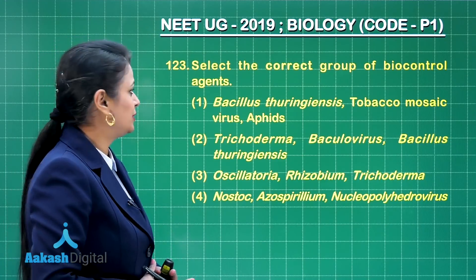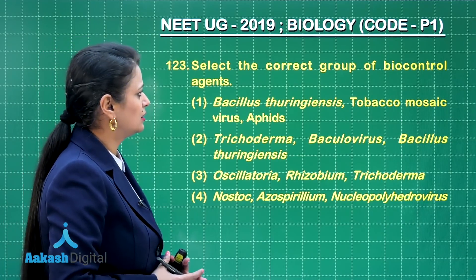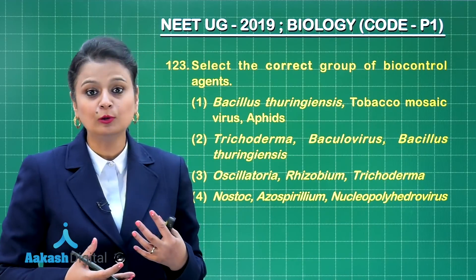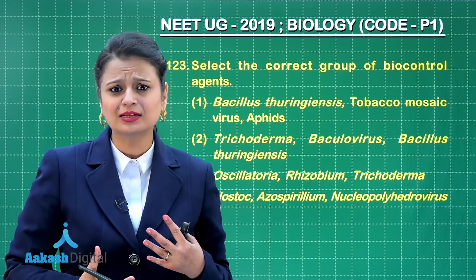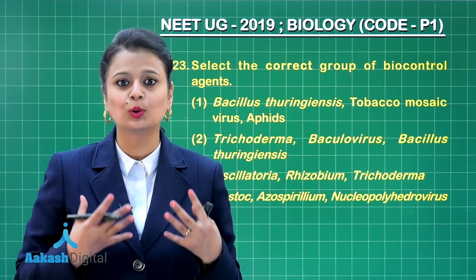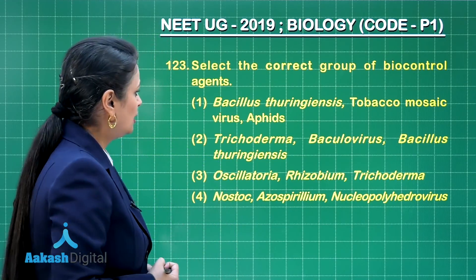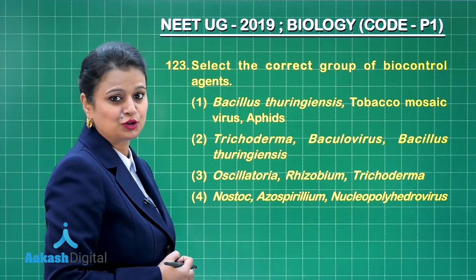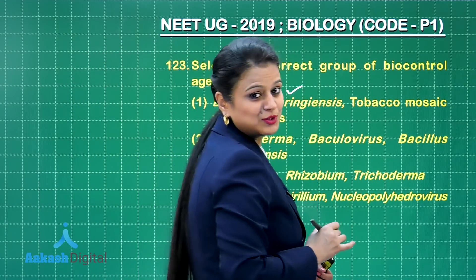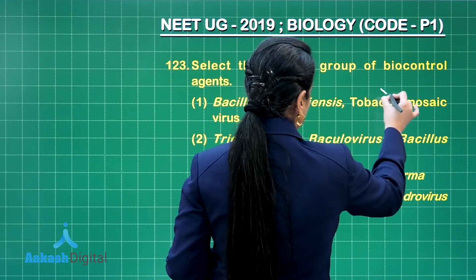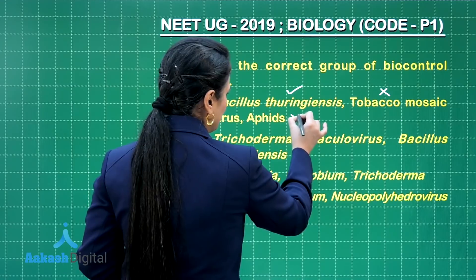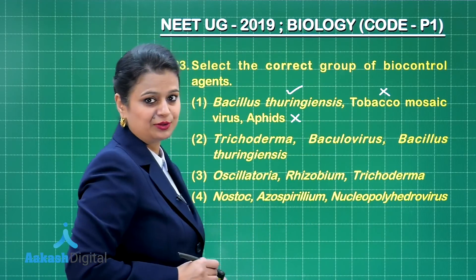Question number 123: select the correct group of biocontrol agents. We have to look for the microorganisms or entities involved in controlling pests. Bacillus thuringiensis — yes, it is used as a biocontrol agent. Tobacco mosaic virus — no, this is a pathogen. Aphids are pests, so they are not related here. Trichoderma is a fungus used as a biocontrol agent.